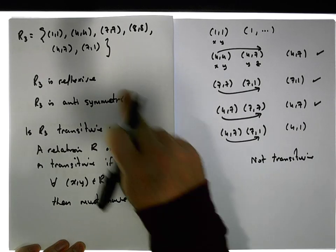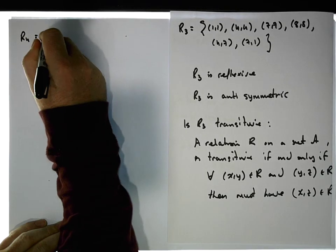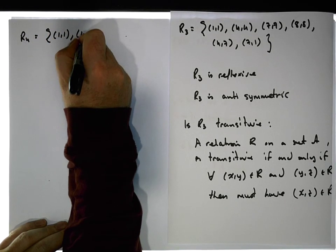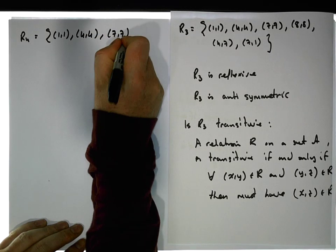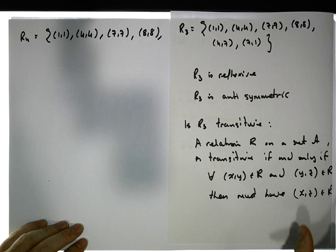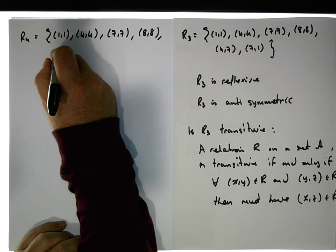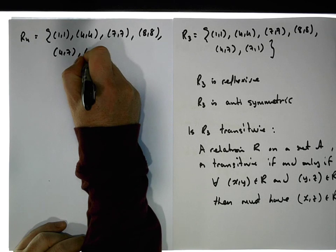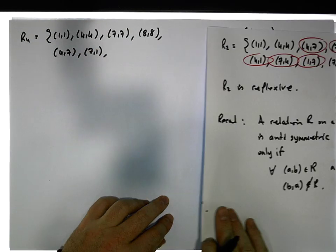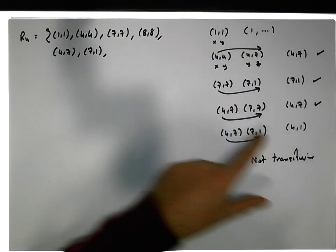So let's throw this in and let's see what we get. So let's call this R4 is equal to, let's say we have one, one, four, four, seven, seven. We have eight, eight. We have four, seven. We have seven, one. And a reason why it wasn't transitive a moment ago was because we were missing the value four, one. So let's put it in here. So four, one.